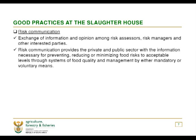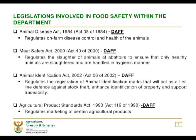We've been having discussions and ideas as to how we are going to go about preventing this problem. The main legislations within the Department of Agriculture include the Animal Disease Act, which regulates on-farm disease control and animal health; the Meat Safety Act, which regulates the slaughter of animals at abattoirs to ensure only healthy animals are slaughtered and handled hygienically; the Animal Identification Act, which regulates registration of animal identification marks supporting traceability; and the Agricultural Product Standard Act, which regulates the marketing of certain agricultural products.